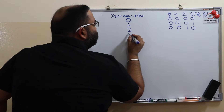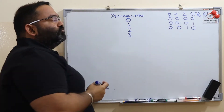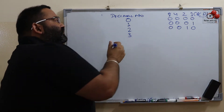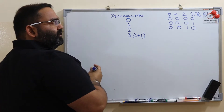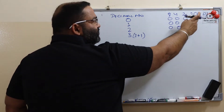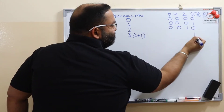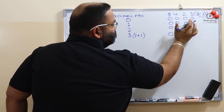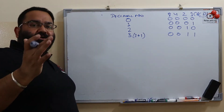For decimal number 3: we do not have 3 in 8 4 2 1 directly. So 3 is 2 plus 1. We need 1 and 2, turning them on and the others off. So 2 plus 1 gives 3, represented as 0 0 1 1.